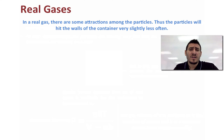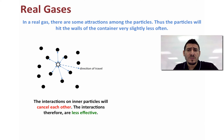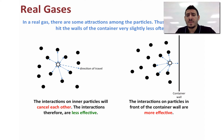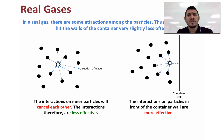In a real gas there are some attractions among the particles, thus the particles will hit the walls of the container slightly less often. For inner particles, the interactions cancel each other out. However, for particles closer to the container wall, the interactions are much more effective — the particles are pulled toward the inside of the gas and therefore hit the wall less often or with less force, affecting the pressure. That is why we need to add a correction factor to the pressure as well, just as we did with the volume.